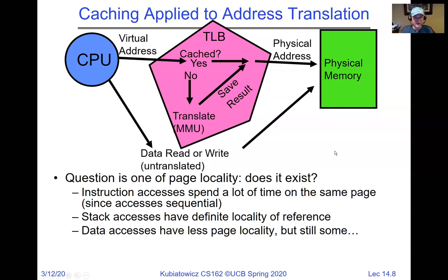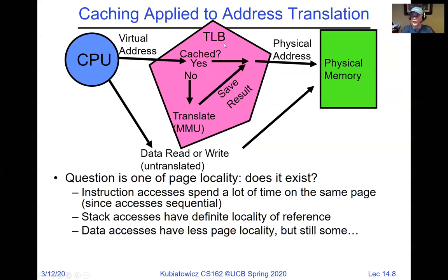Is there locality in address lookup? With loops in instructions, we tend to use the same pages over and over — definite locality in the instruction stream. The stack also has definite locality since you're pushing and popping repeatedly on the same pages. Data accesses have less page locality, but still some. Walking across gigabytes of a huge array would have no locality and you'd spend all your time faulting in the TLB, but many other patterns are much better.